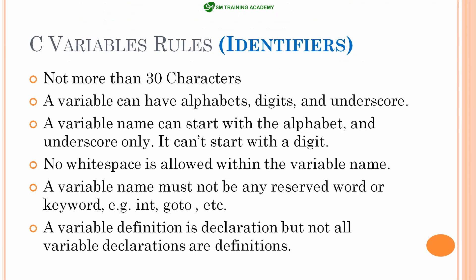Other than reserved keywords, you can use anything as per your need and understanding. One important point: a variable definition is a declaration, but not all variable declarations are definitions. For now, since we are at an initial state of learning C programming, understand that variable definition means allocating a particular memory for that variable, while variable declaration is telling the compiler there is a memory called so and so. I will explain the difference between variable definition and declaration in detail in a later video.